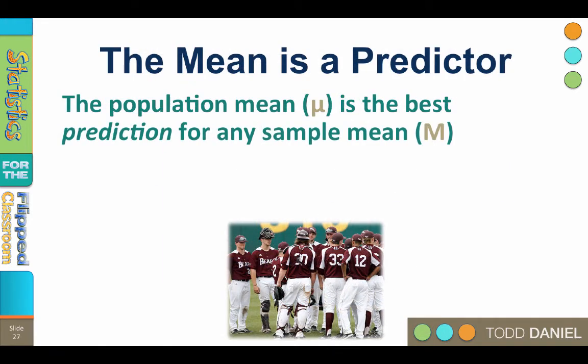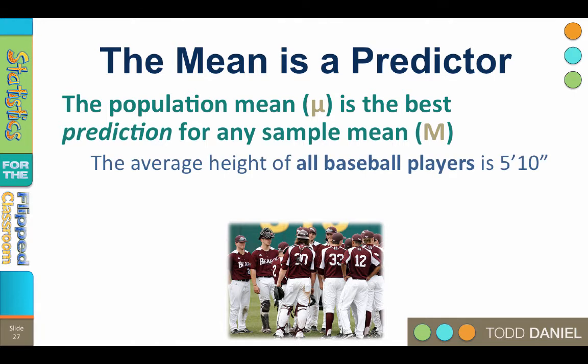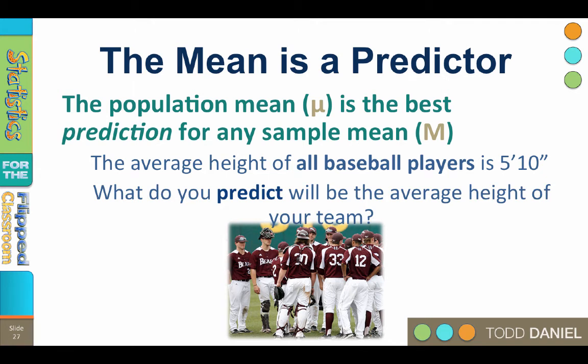The mean also works as a predictor. The population mean, mu, is always the best prediction for any sample, m, drawn from that population. What is true of the population should be true of any sample drawn from that population. So if you were told that the average height of all baseball players is 5 foot 10, then what would you predict will be the average height for your baseball team, assuming you have not measured them yet? If you know that your sample is drawn from a population with a mean of 5 foot 10, then your best prediction of the average height for your baseball team is 5 foot 10.